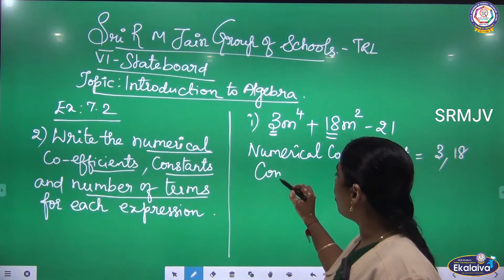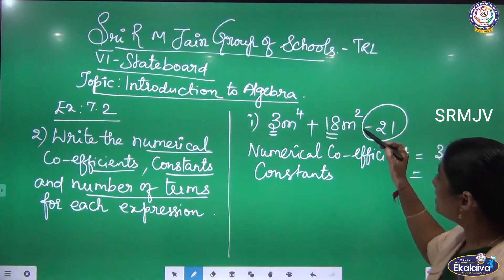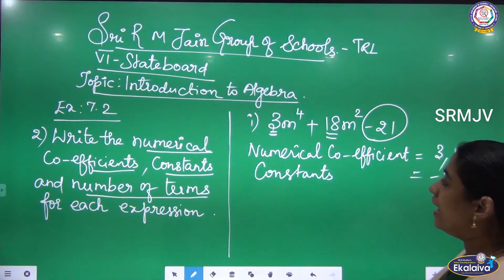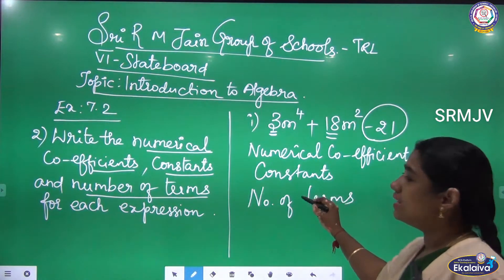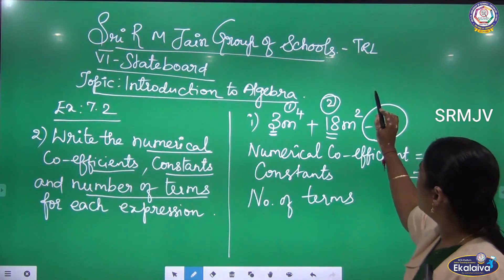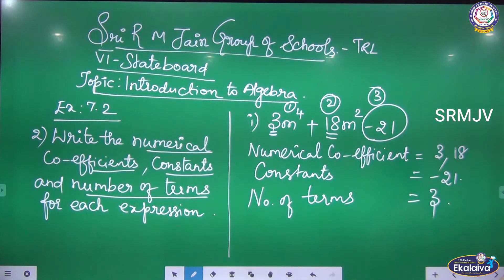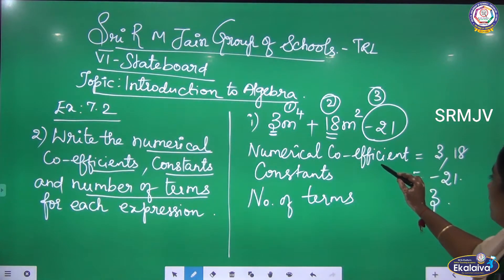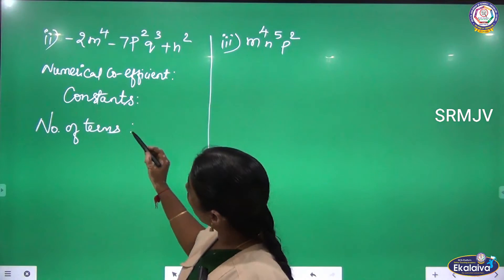Now for the constants: what is the constant here? Minus 21. Note the symbol — it is minus, so the constant is -21. Now for the number of terms: how many terms are there? 1, 2, and 3. So there are 3 number of terms. The numerical coefficients with the variables are 3 and 18.